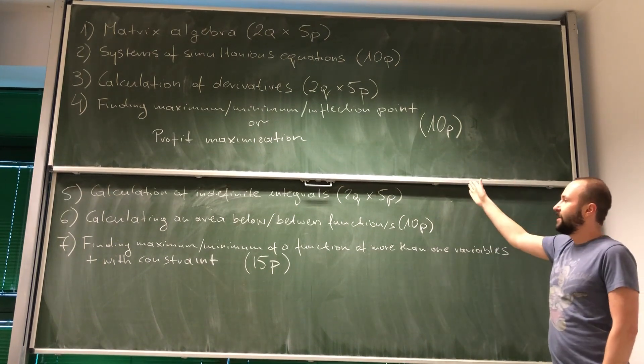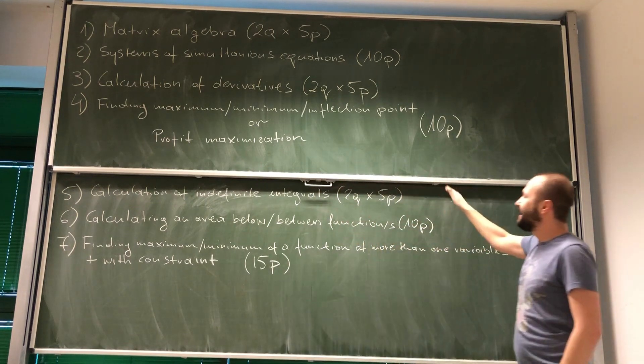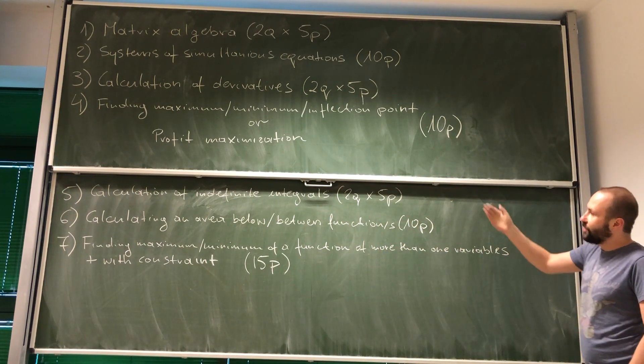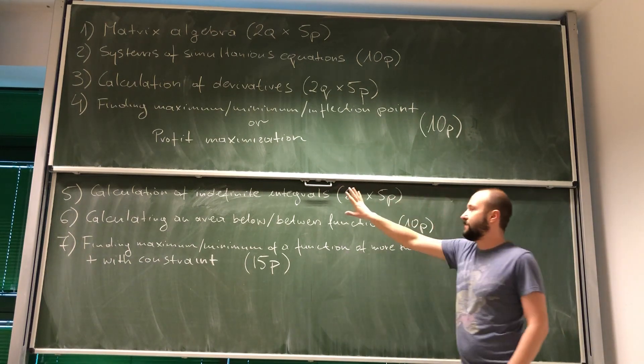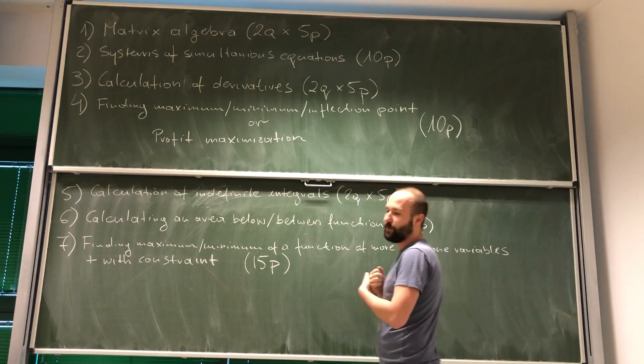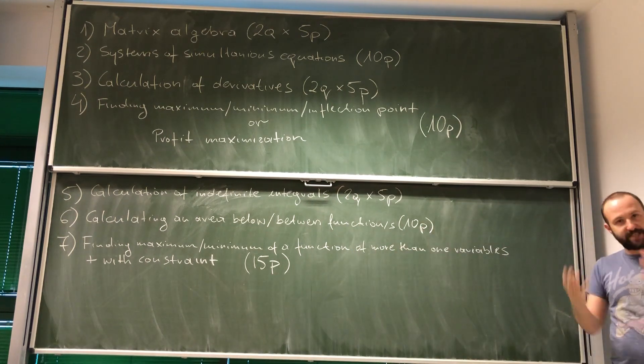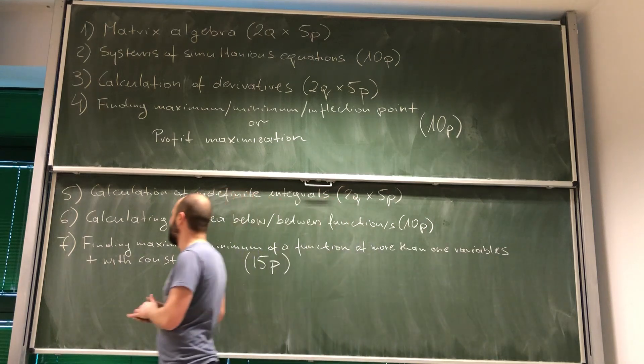Then in question number five, you will have to calculate two indefinite integrals. Each question is going to be worth two points. Then in section number six, you will have to calculate area below the function or between two functions using definite integrals. And this question is going to be worth ten points.